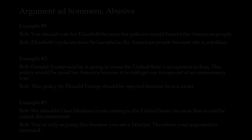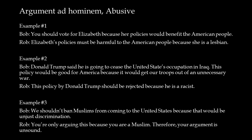The ad hominem fallacy occurs when one dismisses an argument because of the character of the person making the argument, his association with bad people, or his circumstances. One version is the argument ad hominem abusive, which claims we are justified in rejecting an argument because the person is a bad person or a hypocrite. For example: You should vote for Elizabeth because her policies would benefit the American people. Elizabeth's policies must be harmful because she's a lesbian. The fact that Elizabeth is a lesbian does not at all mean her policies will have bad consequences for the American people.